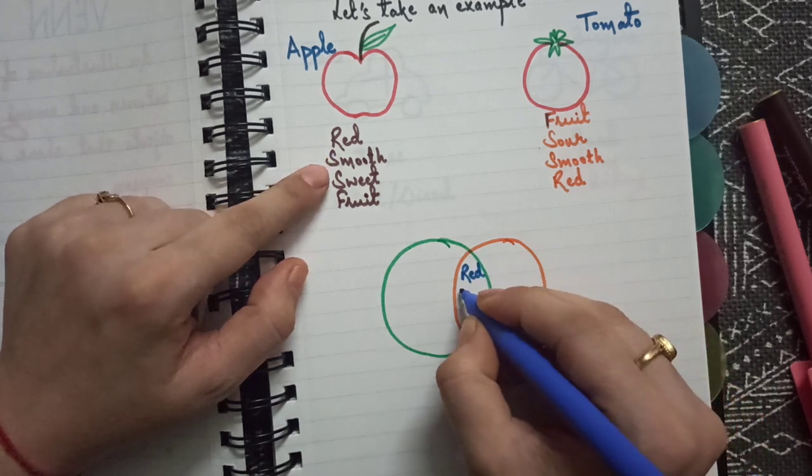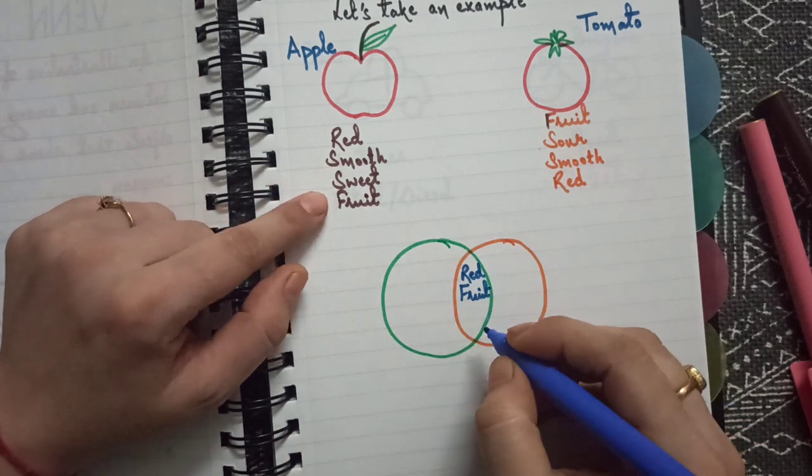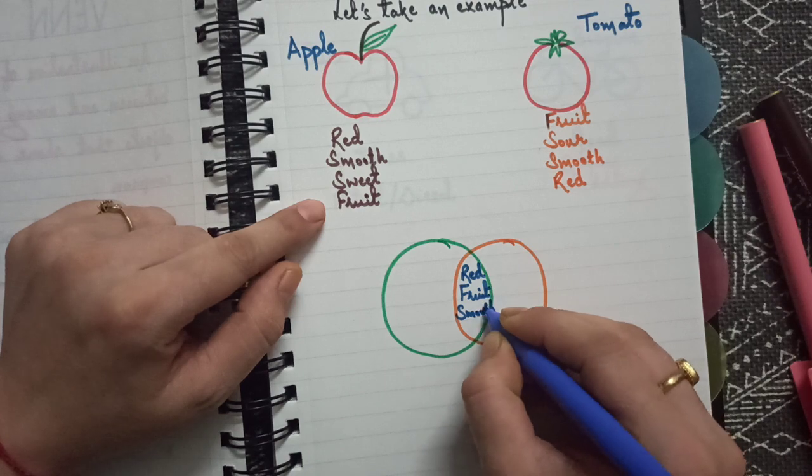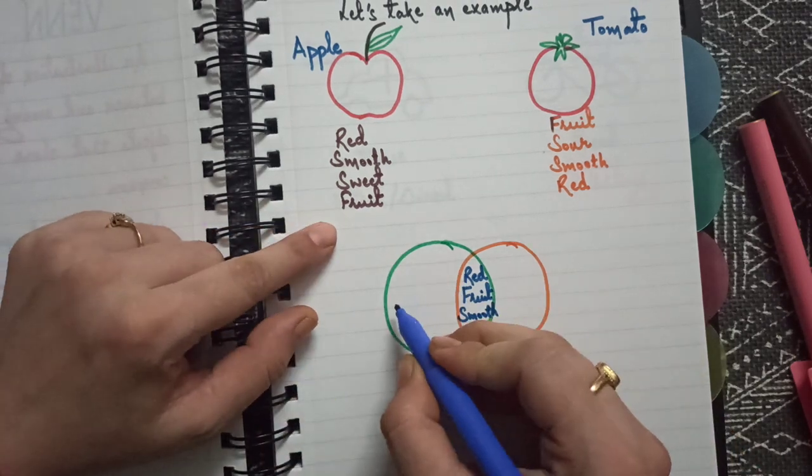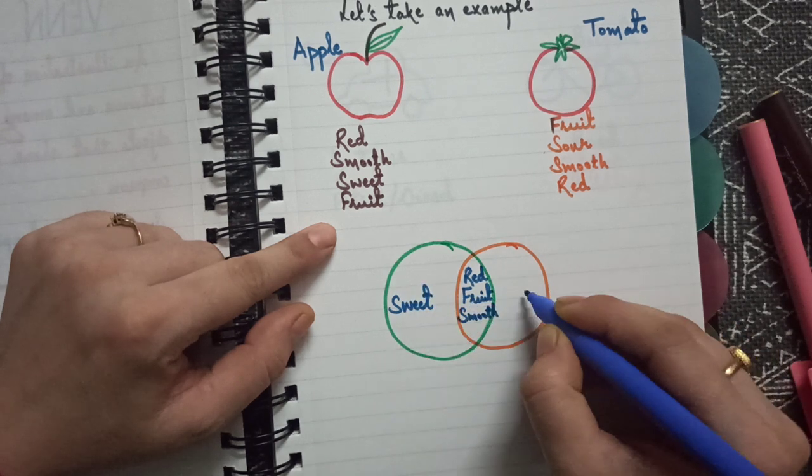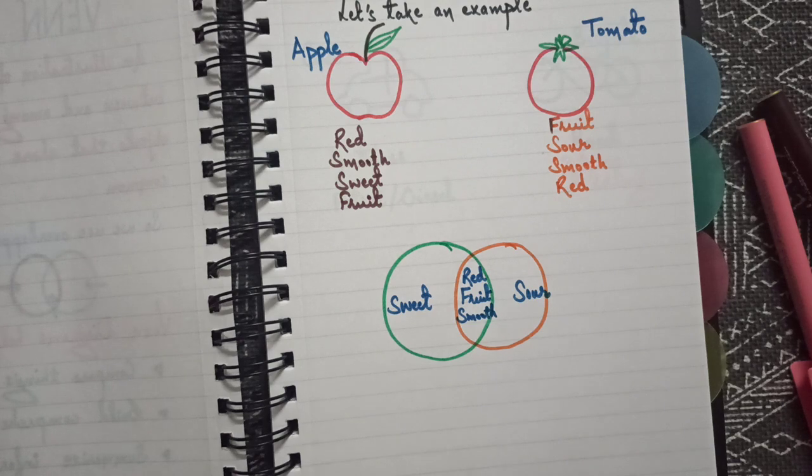What we will do is in the center we will write their common properties. Both of them are red, both of them are fruits, and what else - smooth. Now what is the difference? This is sweet and this is sour. So this is the Venn diagram.